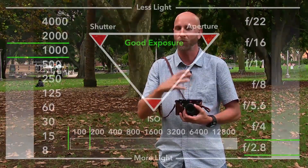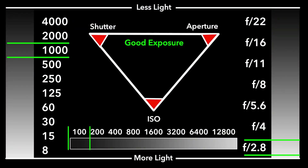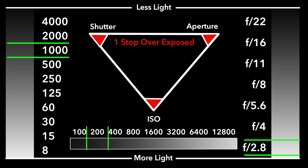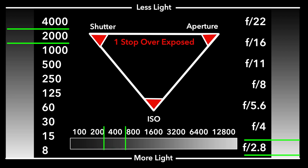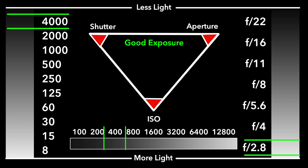What if we want our shutter speed to stay at 4000 but we can't open our aperture any wider — f2.8 is as wide as this lens goes? We use our ISO. We go from ISO 100 to 200 — that's one stop — which lets us change our shutter by one stop to 2000. Then we go from ISO 200 to 400 — that's one stop — and our shutter can go one stop back to 4000. You get the idea.